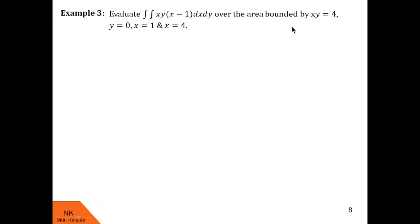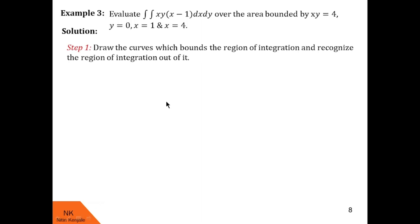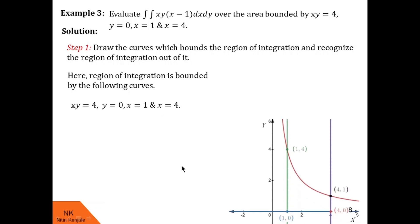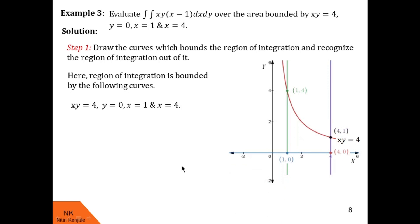Here we are asked to evaluate the double integral of xy(x − 1) dx dy over the area bounded by curves xy = 4, y = 0, x = 1, and x = 4. In step 1, we draw the bounding curves. xy = 4 is a rectangular hyperbola, y = 0 is the x-axis, and x = 1 and x = 4 are straight lines parallel to the y-axis. Together they bound this region of integration.